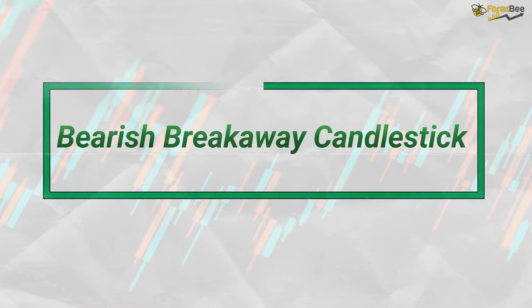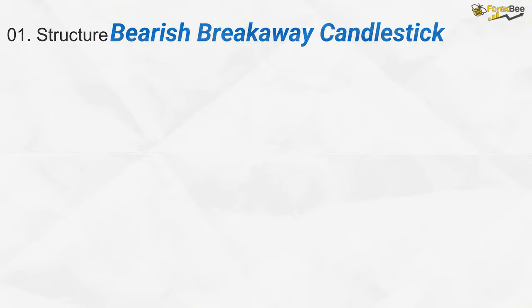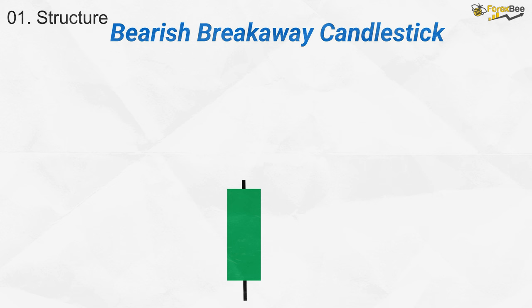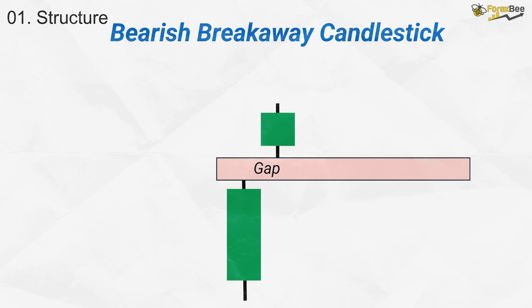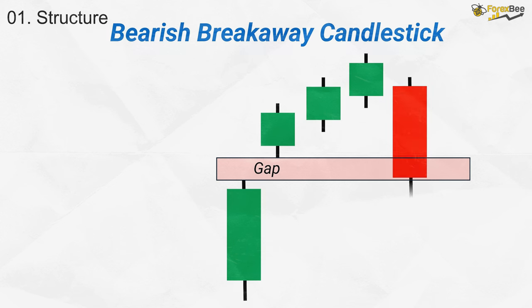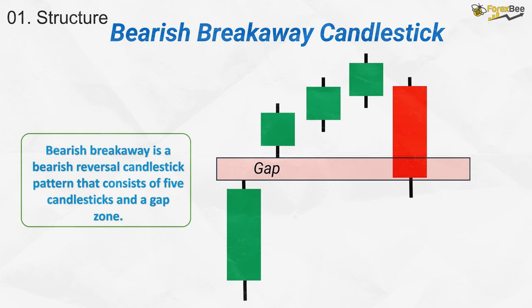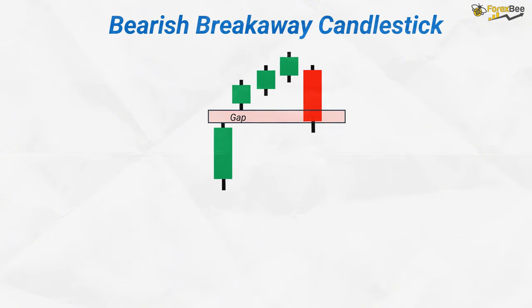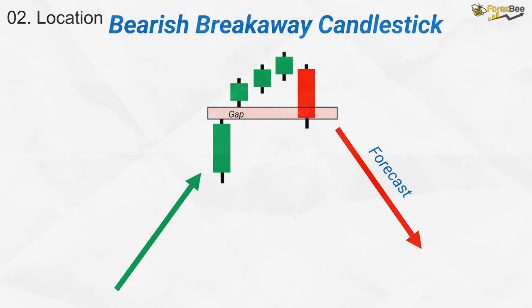Now, let's talk about the bearish breakaway candlestick pattern. Its structure consists of five candles. The first is a strong bullish candle indicating continued buying pressure, followed by a smaller bullish candle that gaps up, signaling slowing momentum. The third and fourth candles are also small bullish ones showing further weakening in the trend, and the fifth is a strong bearish candle that closes deep into the body of the first bullish candle. This pattern usually forms at the top of an uptrend and suggests a potential reversal, as sellers begin to overpower buyers, signaling a likely shift to a downtrend.